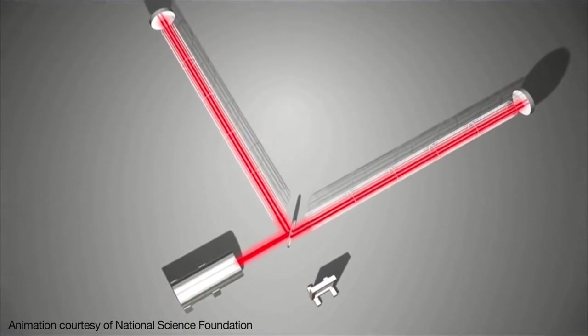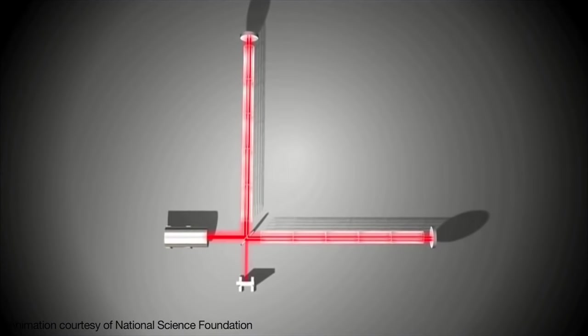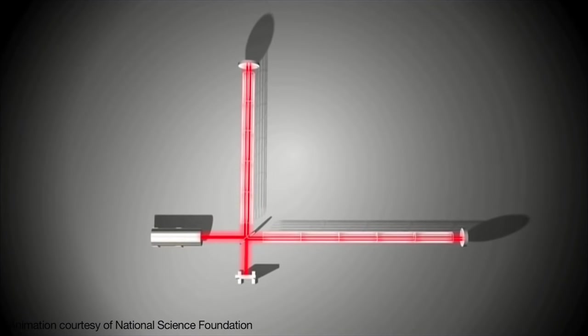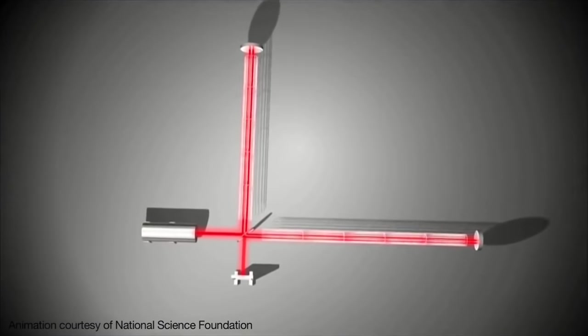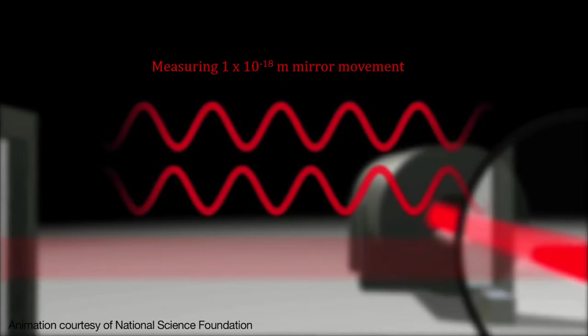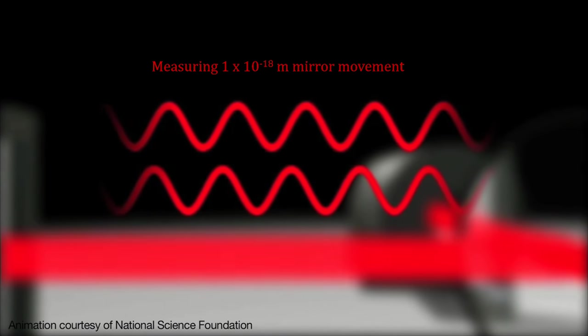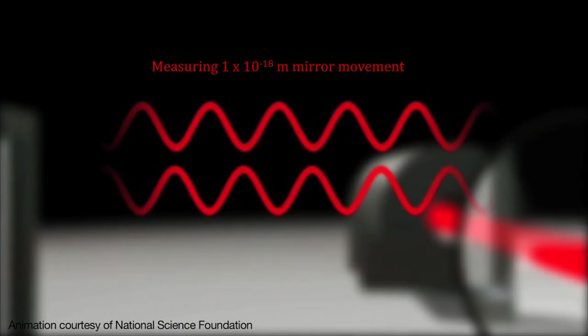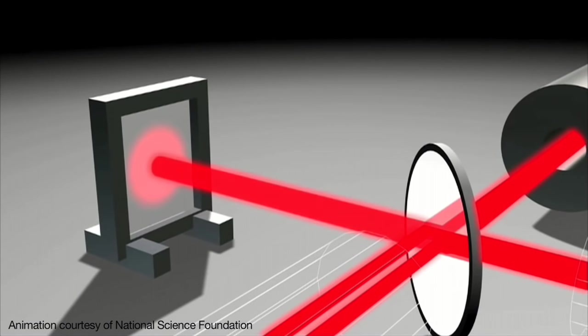When a gravitational wave passes through the interferometer, the distance along the arms of the interferometer are shortened and lengthened, causing the beams to become slightly out of sync. Hence, some light arrives at the photodetector indicating a signal. Given LIGO's extra 280 passes through the tube, a gravitational wave strain amplitude of 10 to the minus 21 would displace the mirrors by 10 to the minus 18th meters. That's 1,000th the diameter of a proton.